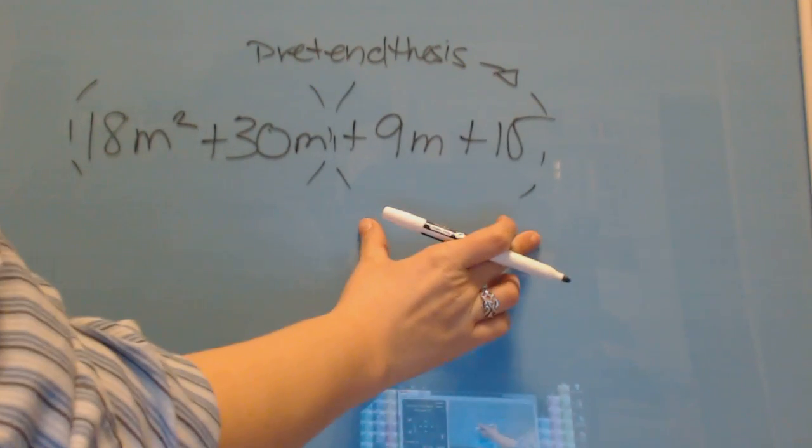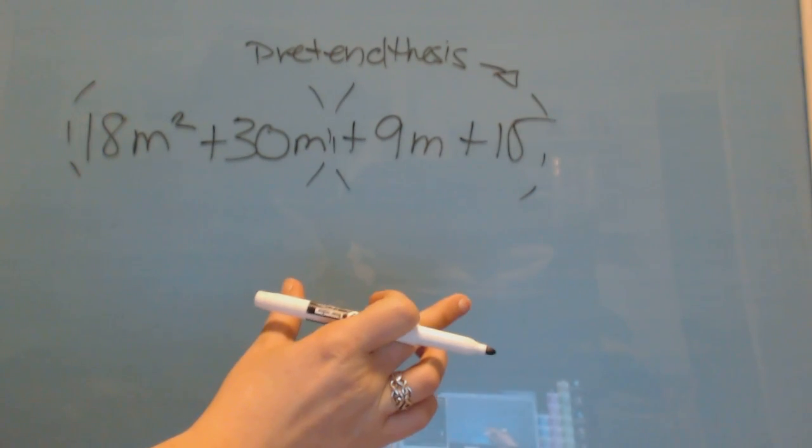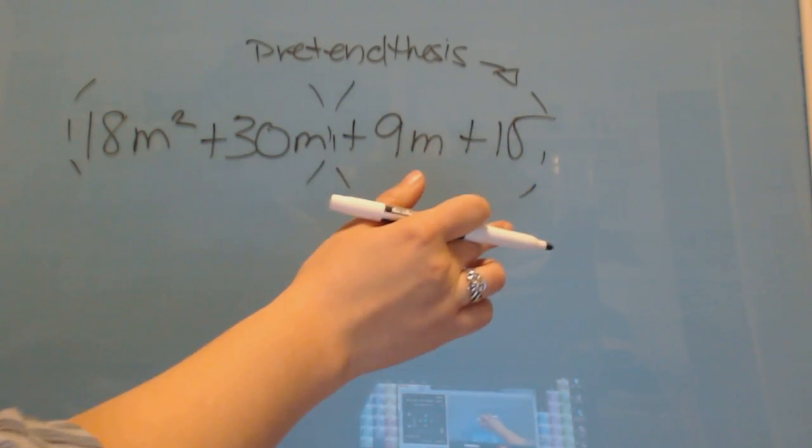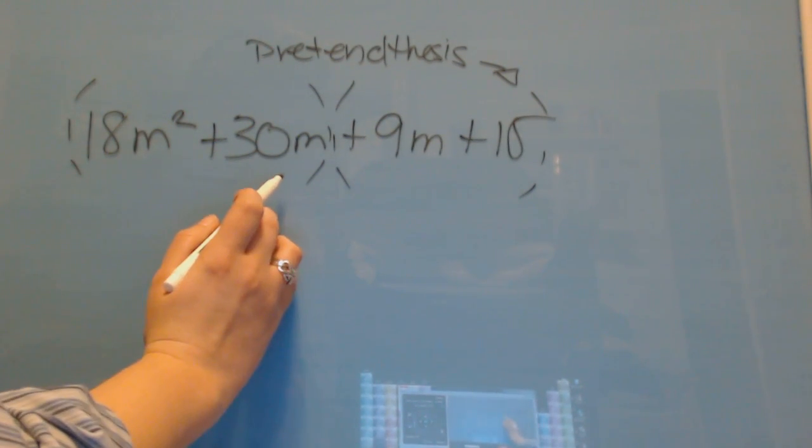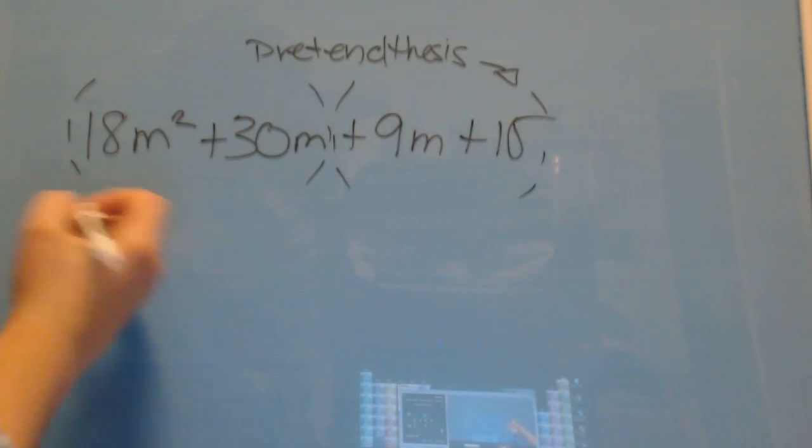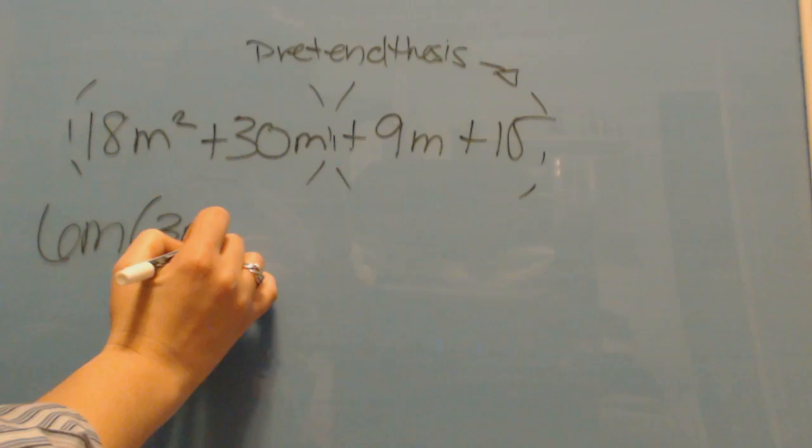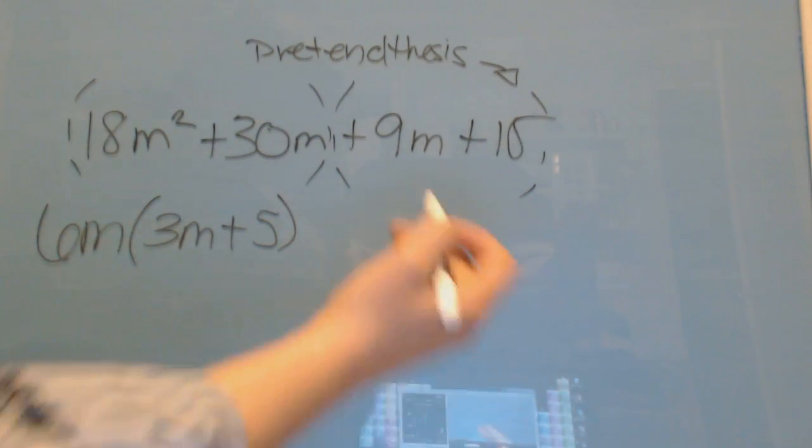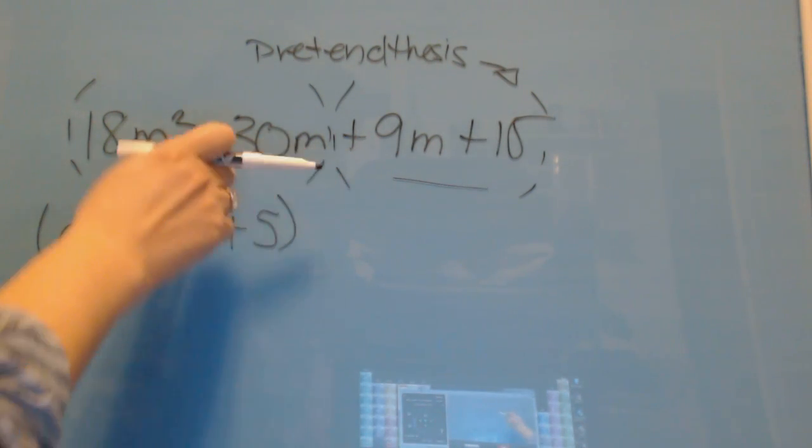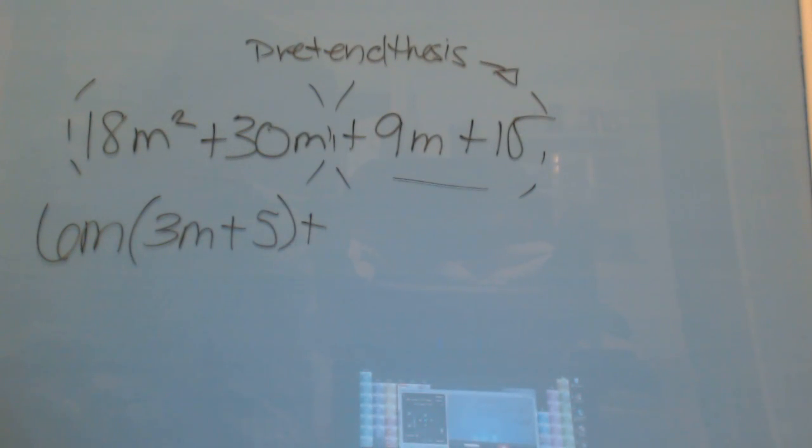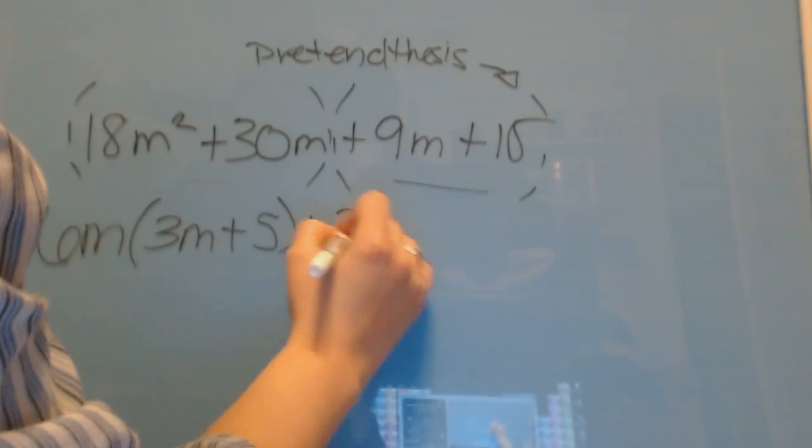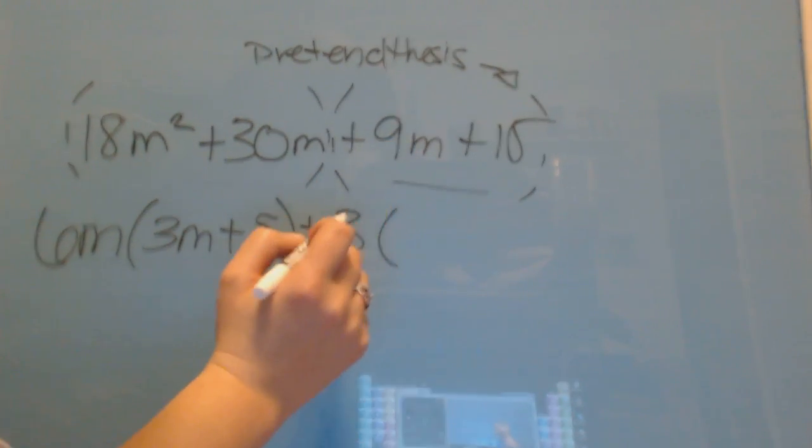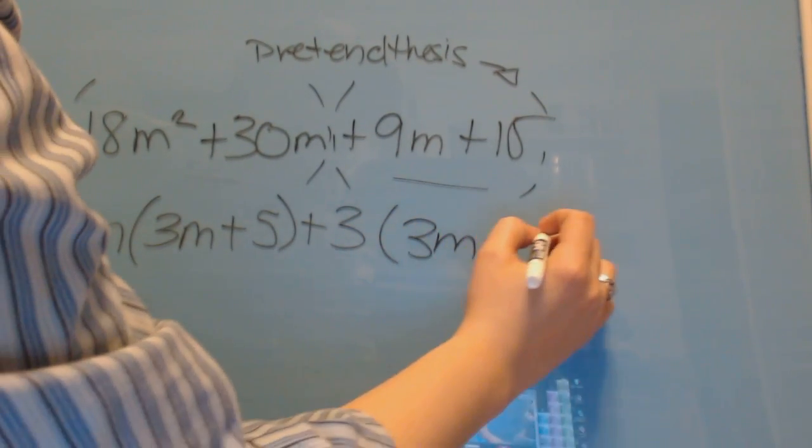So, now what we want to do is we're looking at these guys as two binomials. They're two binomials because binomials means two terms. And we've got two terms in each parenthesis. So, the greatest common factor out of 18m squared plus 30m is 6m. So, we go ahead and we pull the 6m out. And then inside the parenthesis is going to be 3m plus 5.